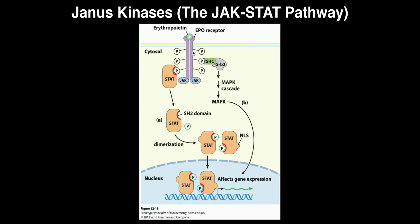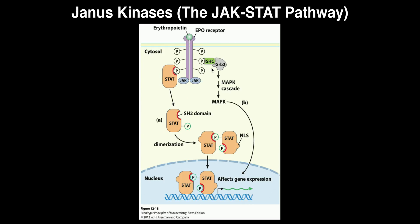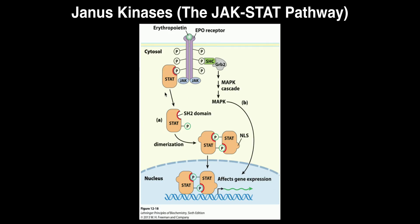Now, these phosphates — just like in the case of the RTK — are sticky and they stick onto different proteins. On one side, we can actually have a MAP kinase cascade, in the exact same way we saw for the insulin receptor RTK. There's a protein called SHC, which activates GRB2, and we get the mitogen-activating protein kinase cascade, or MAP kinase cascade. That's exactly what we see here with GRB2 activating the entire cascade.